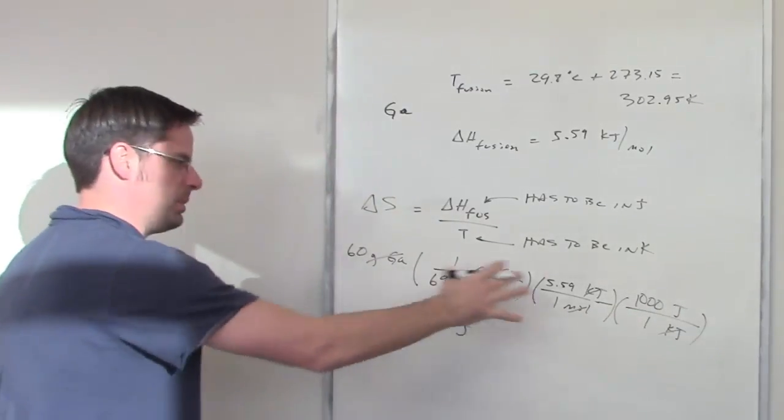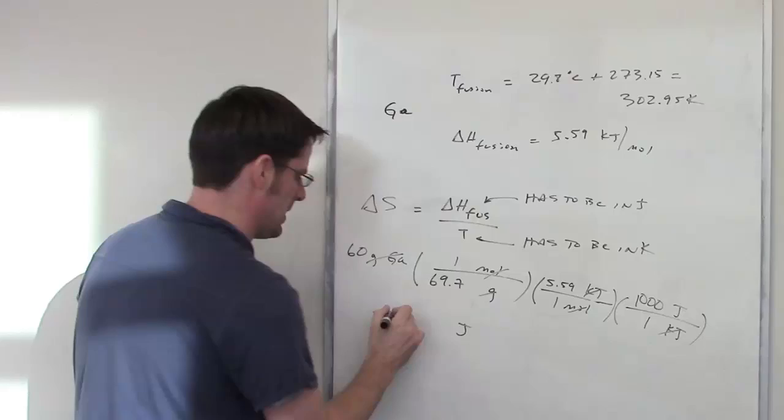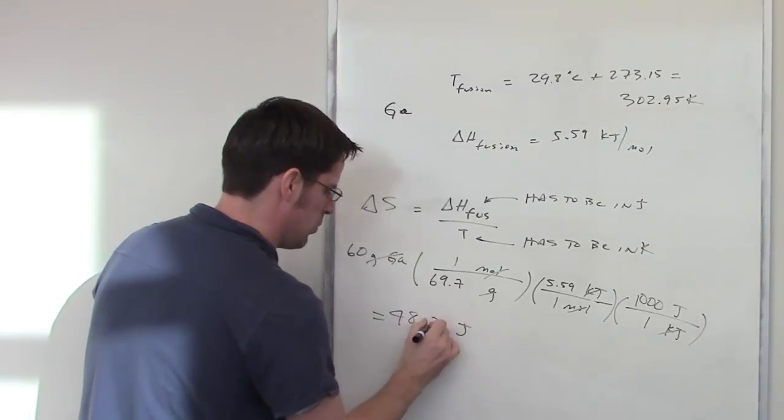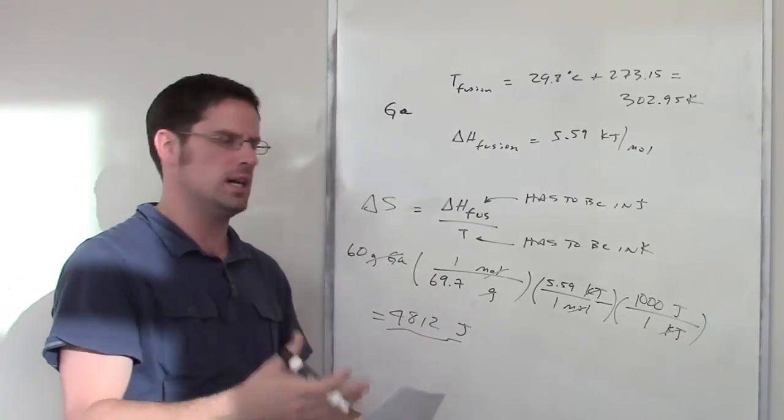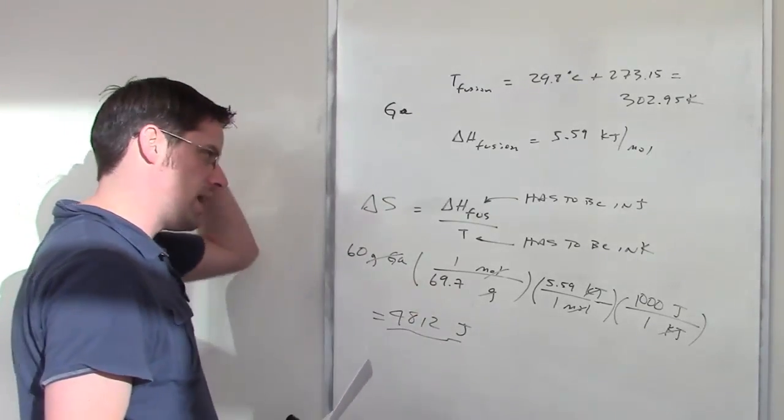I do all that plug and chug in my calculator and I end up getting 4,812 joules as the total number of joules that 60 grams of gallium would require in order to make this change.